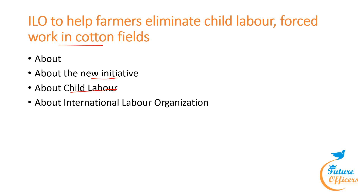The International Labor Organization is the only tripartite UN agency, established in 1919. It brings together governments, employers and workers across 187 member states to set labor standards, develop policies and devise programs promoting decent work. Its functions include creation of coordinated policies on social and labor issues, adoption of international labor standards through conventions and recommendations, and protection of human rights including freedom of association, collective negotiation, and protection against forced labor and discrimination.